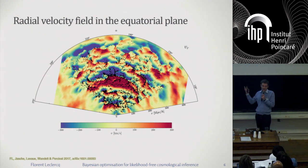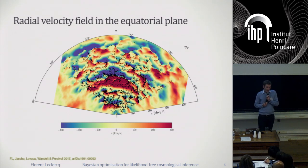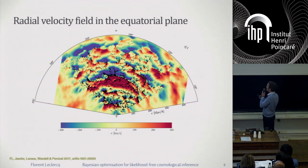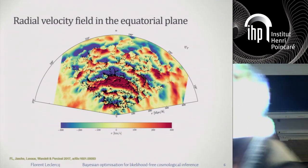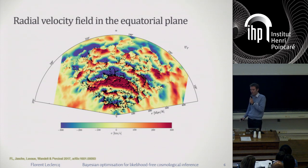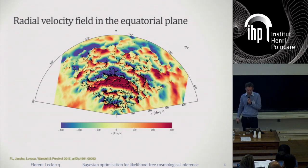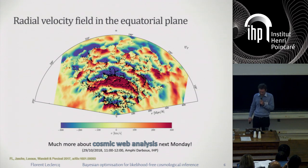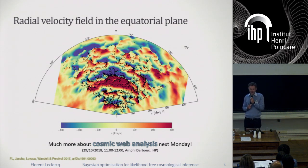One showcase of what we can do from these posterior samples and this reconstruction of the dark matter density field: we can look at the dynamics of structure. Here I'm showing the radial velocity field in the equatorial plane, with the Milky Way here. This large structure is the Sloan Great Wall, one of the biggest structures in the known universe. You can nicely see the reconstructed inflow of matter on the wall — the red part is matter flying away from us by falling on the wall, and the blue crescent is matter coming towards us. I will say much more about cosmic web analysis during my seminar on Monday.